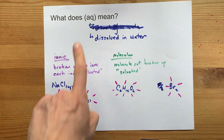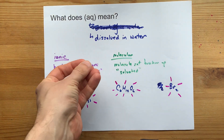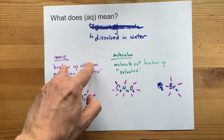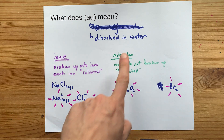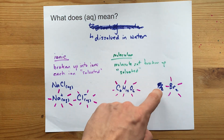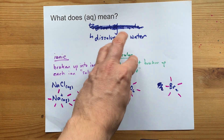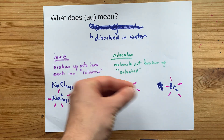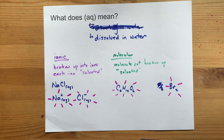AQ means dissolved. And if it's ionic, it means it's broken up into the ions. And if it's molecular, it means that the molecule is still surrounded by water molecules, but not broken up.